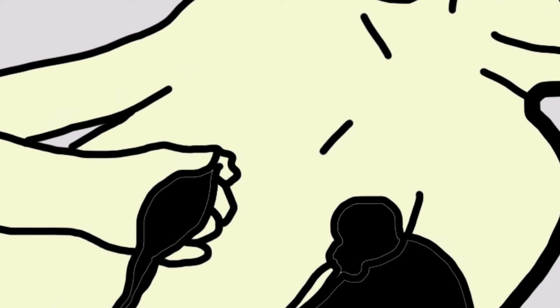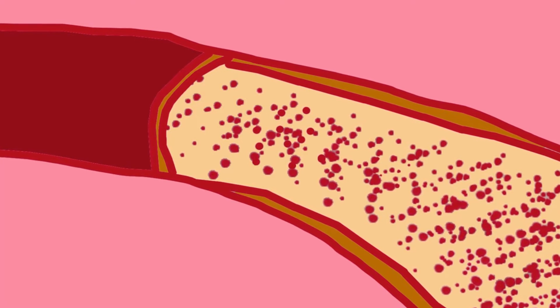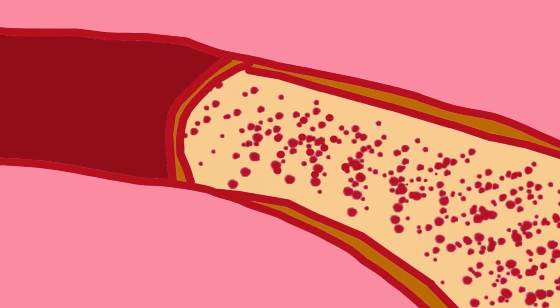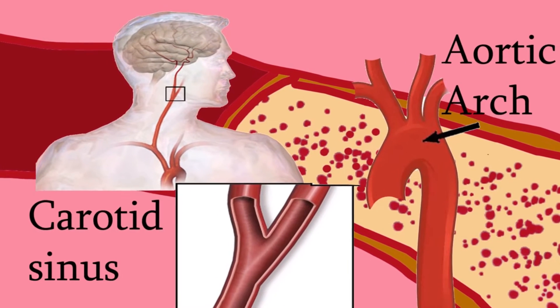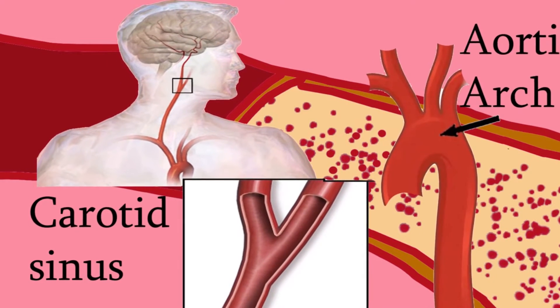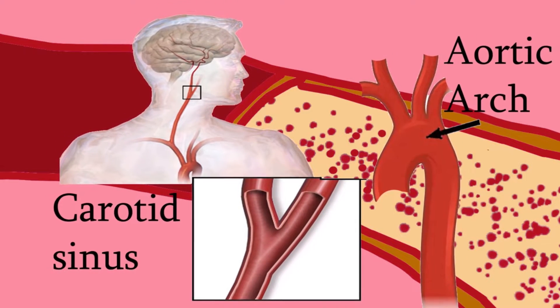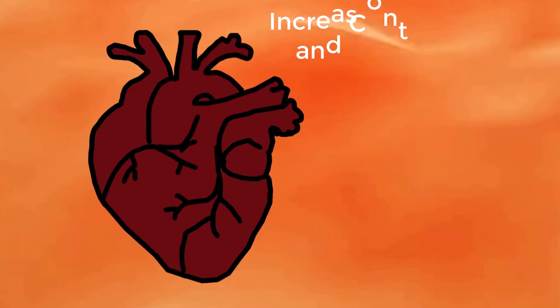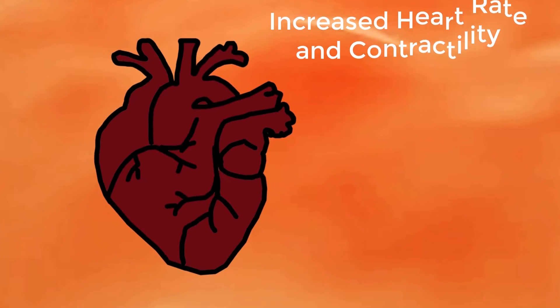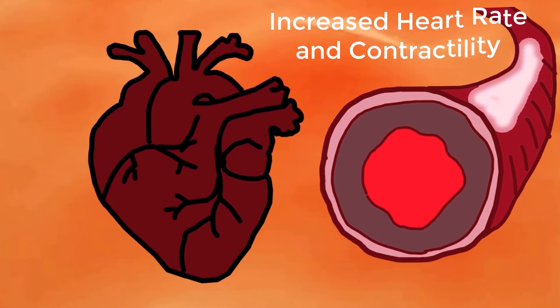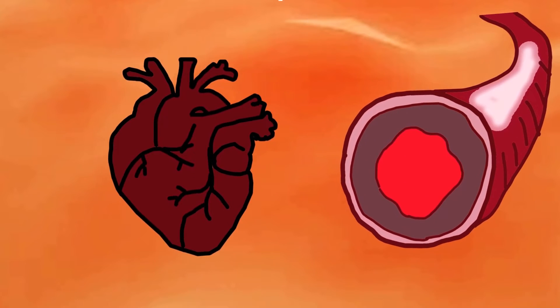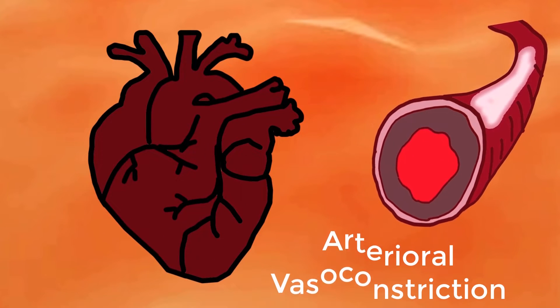When blood volume decreases, the body can quickly sense a fall in blood pressure through its arterial baroreceptors, which are located on the carotid sinus at the bifurcation of the external and internal carotids and in the aortic arch. The body then activates the sympathetic adrenergic system to stimulate the heart, increase heart rate and contractility, and vasoactive substances such as epinephrine, norepinephrine, and dopamine are released, causing arterial vasoconstriction.